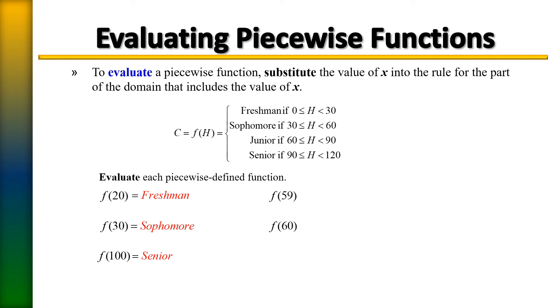59? Yes, 59 would be that sophomore because once they cross that 60 mark, that is when they become a junior.